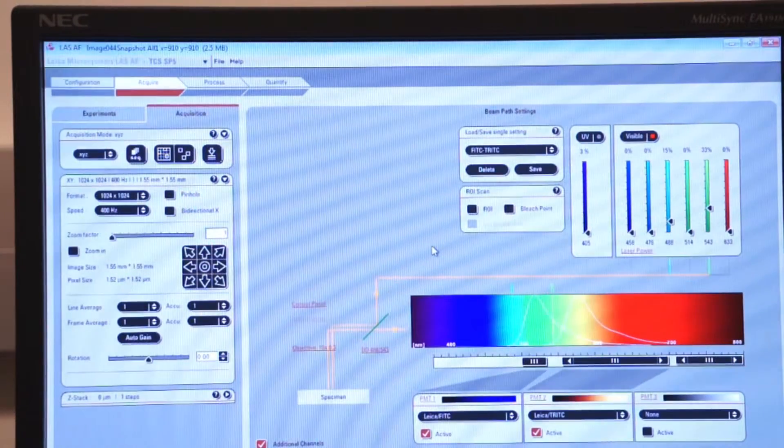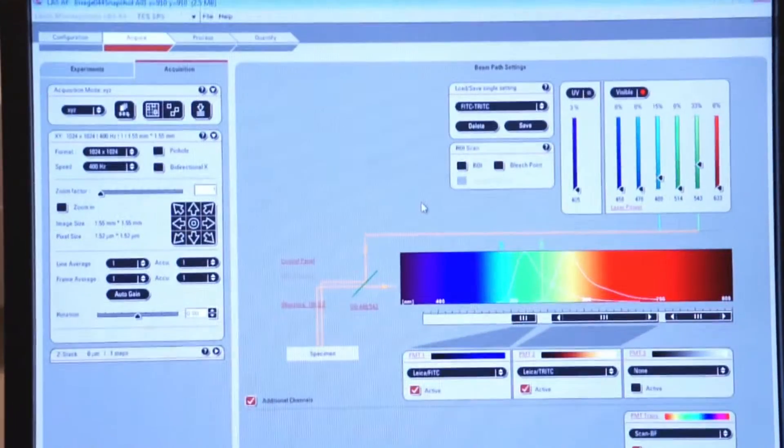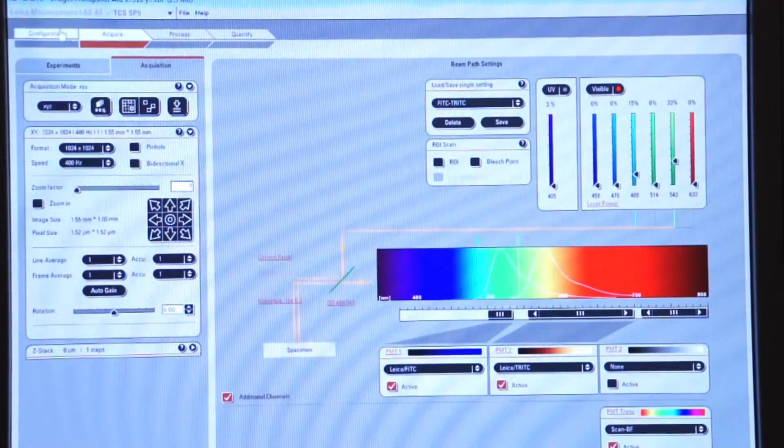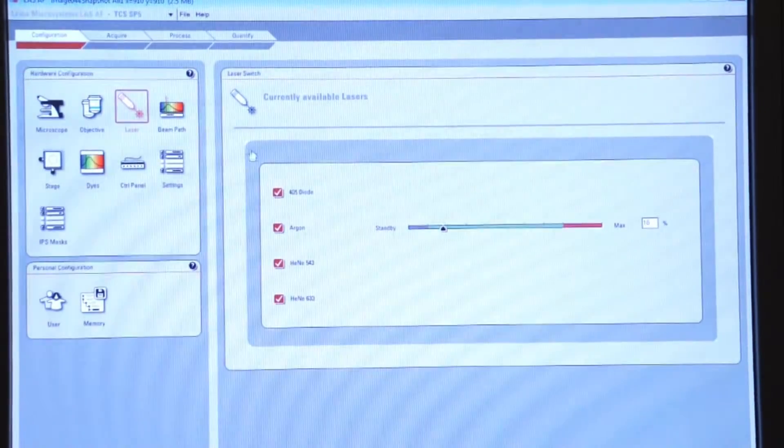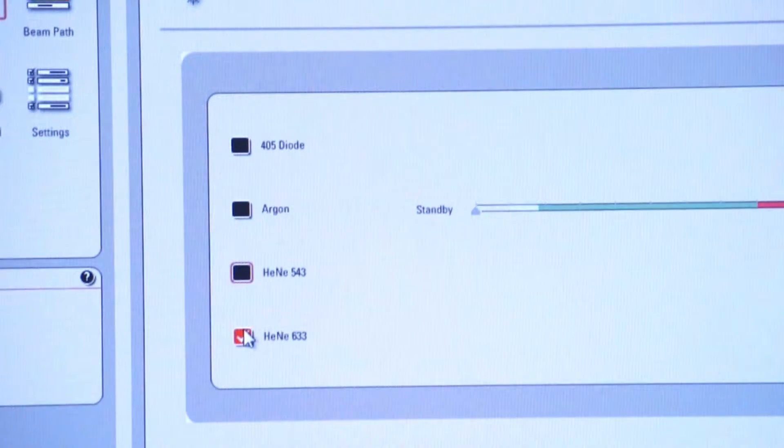Now, let's talk about shutdown of the entire system. Now that we've completed our session for the day, we want to shut down the software and the system in a proper fashion. To do that, we go back to our configuration tab and we turn off each of the lasers that are on the configuration menu.